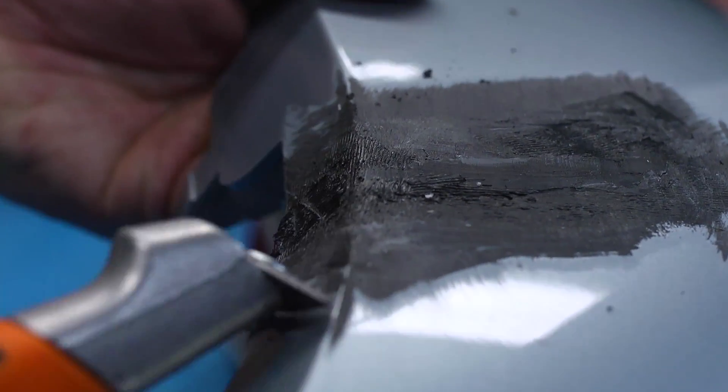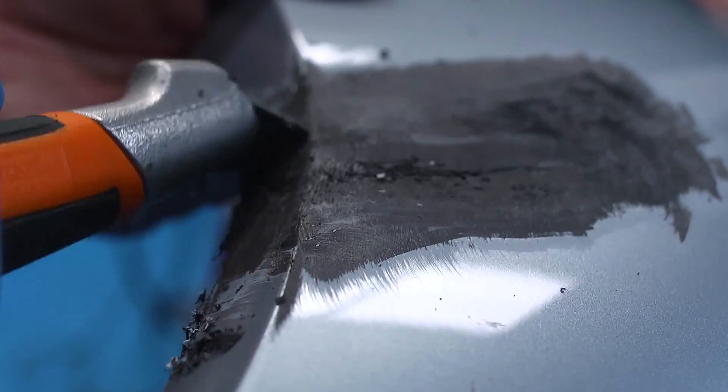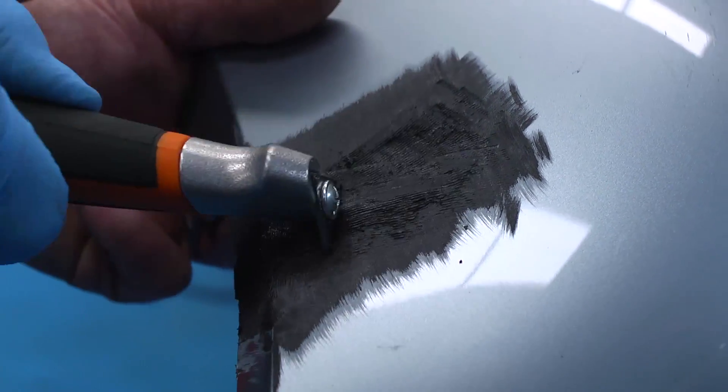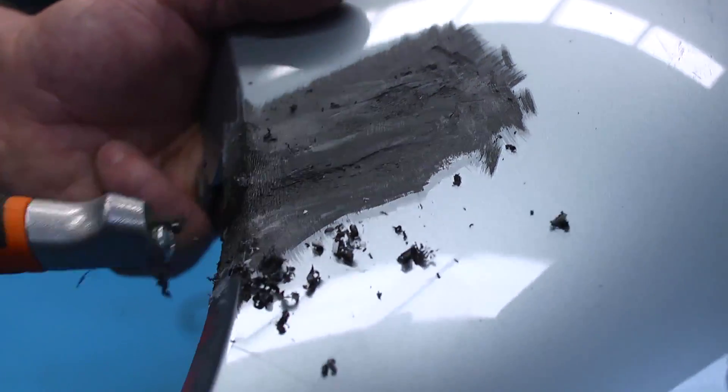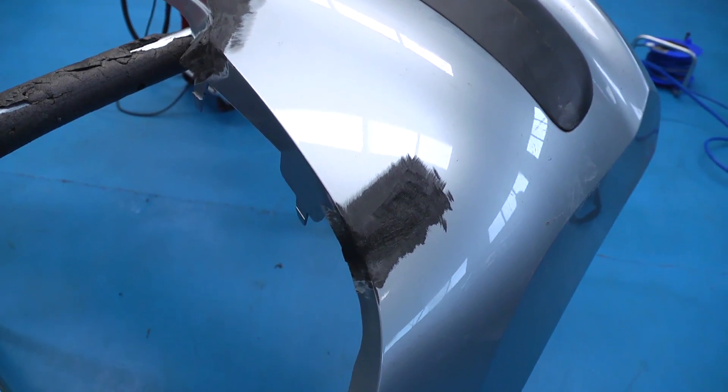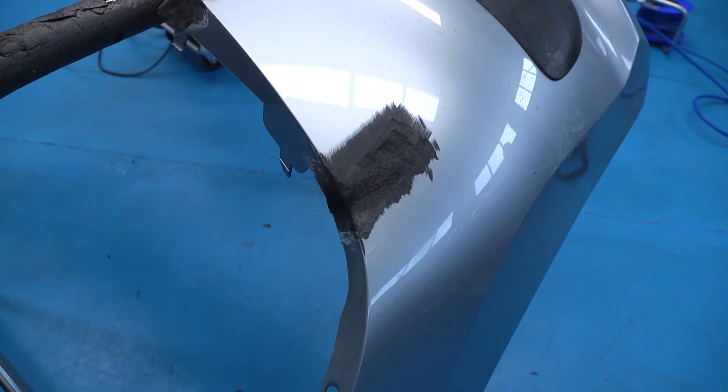The supplied scraper is now used to remove any ridges, high spots or waste material. The result is a strong plastic only repair that can now be refinished and painted.